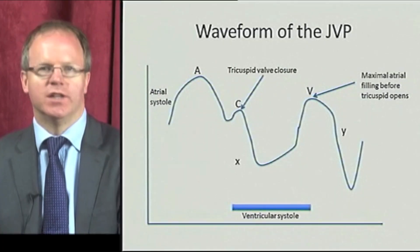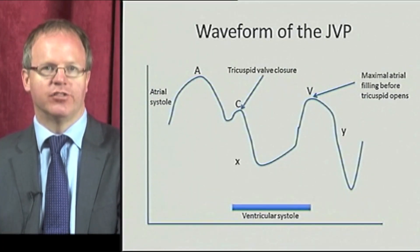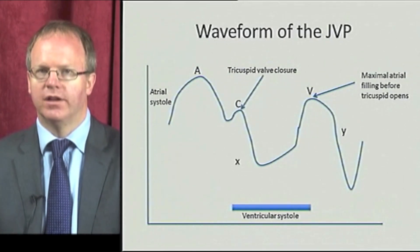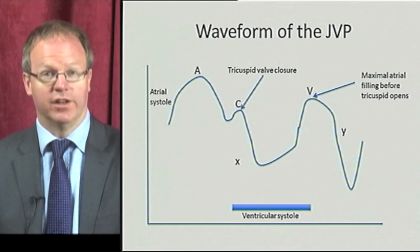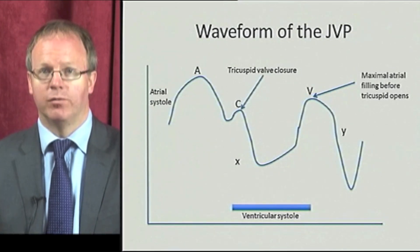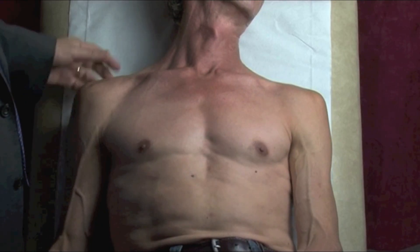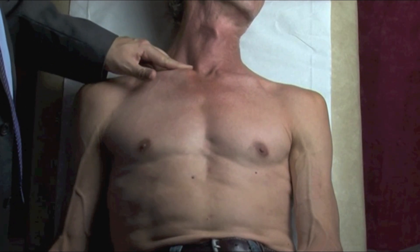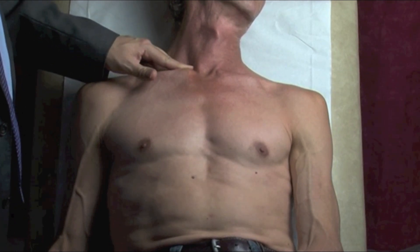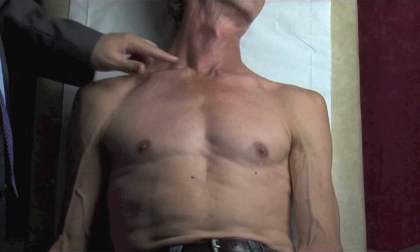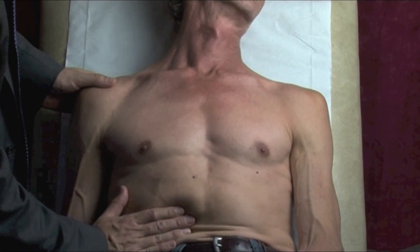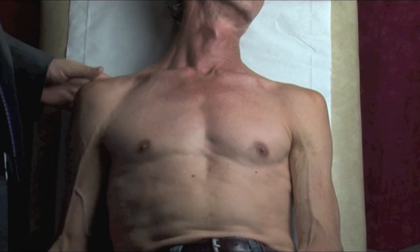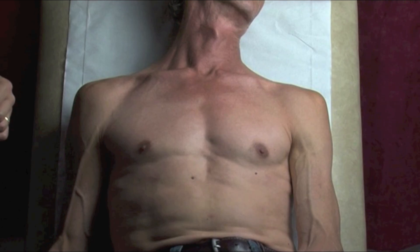Differentiation between the arterial and venous pulsation can sometimes be difficult. This is assisted by three observations. Firstly, the JVP is a bifid waveform in normal health. Secondly, the waveform can be stopped by gentle compression at the base of the neck. And thirdly, the level alters with changes in position and by pressing on the abdomen, which is known as the abdominal jugular reflex.